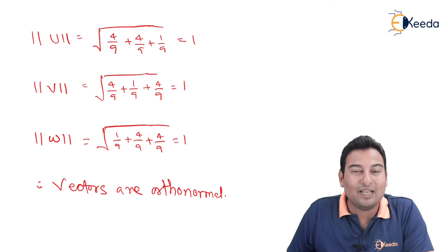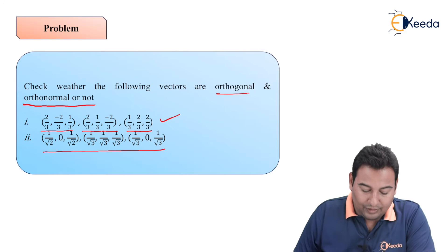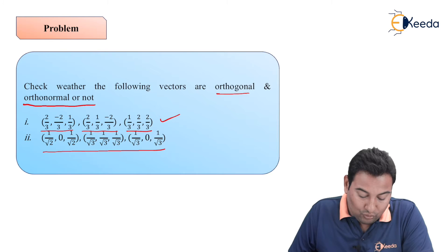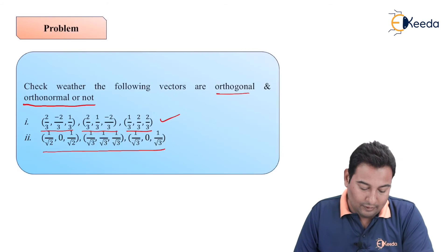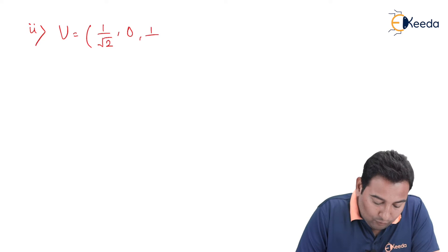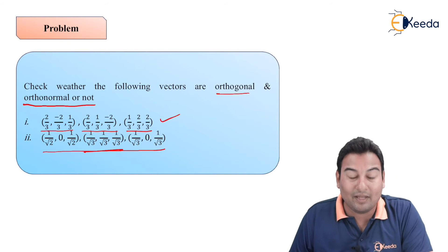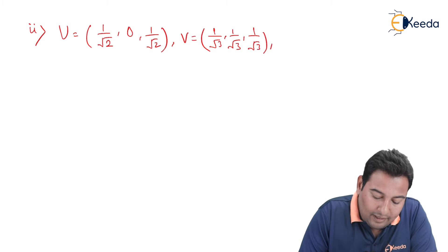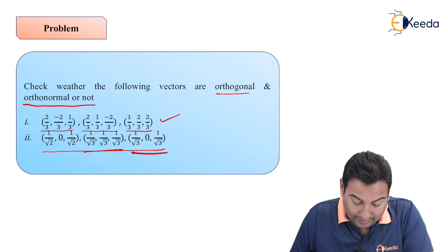We are done with the first problem. There is one more problem in the question. The second problem: same way we name the vectors u, v, and w. u = (1/√2, 0, 1/√2); v = (1/√3, 1/√3, 1/√3); and w = (1/√3, 0, 1/√3).